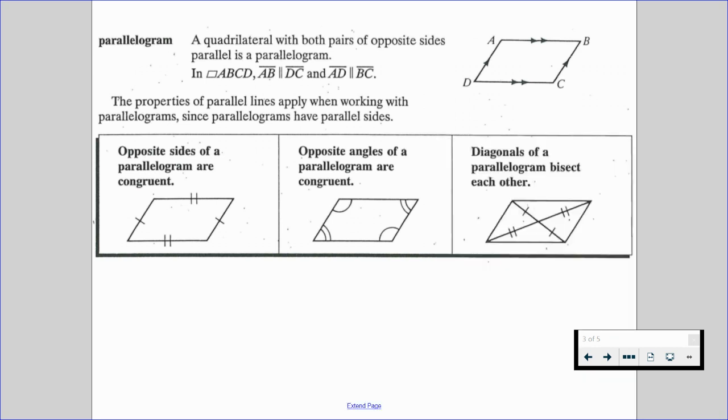And lastly, the diagonals of a parallelogram bisect each other. So when we draw those two diagonals, their point of intersection bisects both of those diagonals. So each diagonal is then split into two congruent pieces.